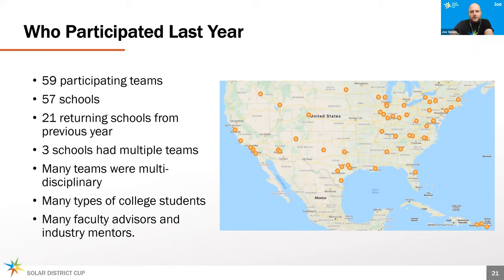We've had many different types of collegiate students — undergraduate, graduate, community college, those with a deep energy background, and those who are brand new to energy. We provide mentorship, guidance, resources, training, and materials so that all of these teams, wherever they're located, can compete and succeed. While many teams have faculty advisors, this is not required. We think you can succeed by committing to participate and learning along the way.